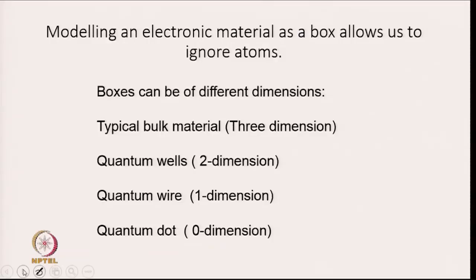Modeling an electronic material as a box allows us to ignore atoms. We are going to apply the concept of particle in a box to model electronic materials. The boxes can be of different dimensions. Quantum wells are known as two-dimensional, quantum wire is modeled as one-dimensional material, and quantum dot is considered to be zero-dimensional.